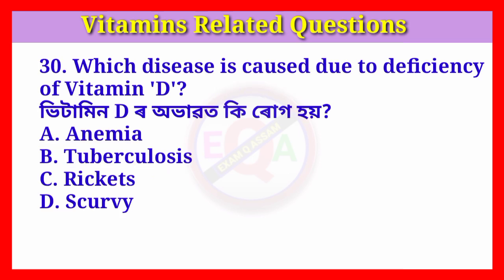Question number thirty: Which disease is caused due to deficiency of vitamin D? Answer: Option C, rickets.